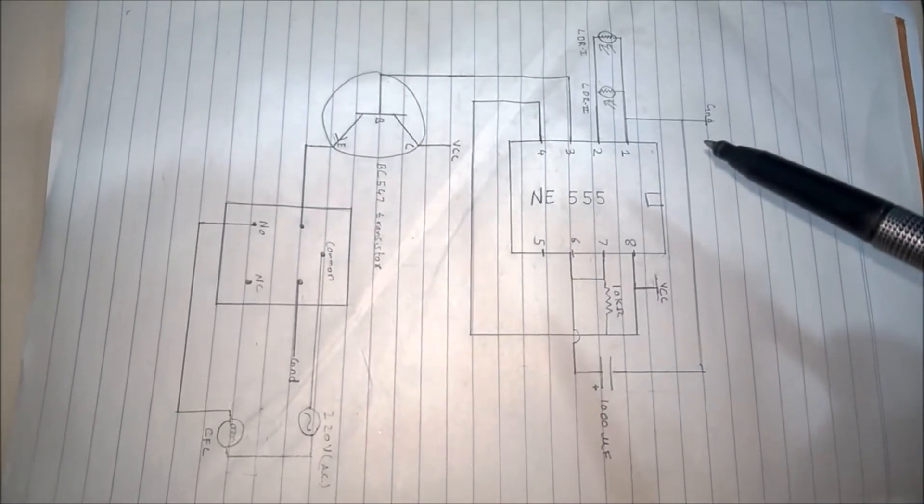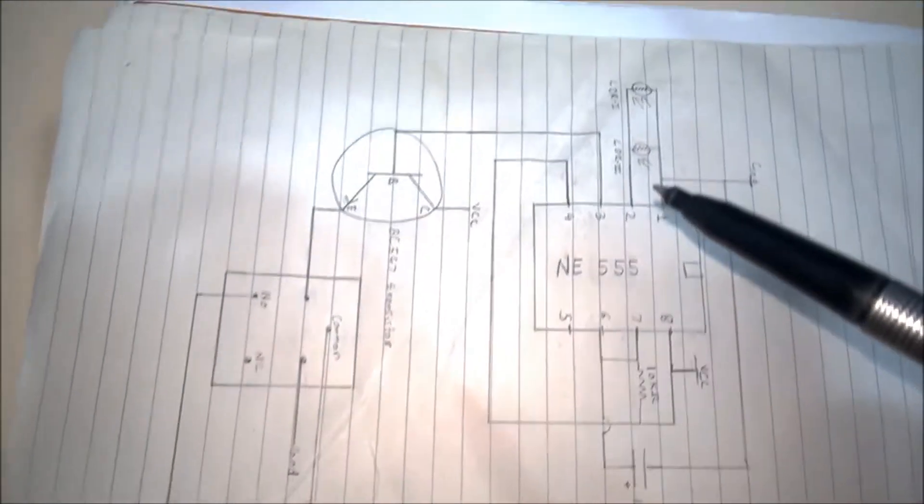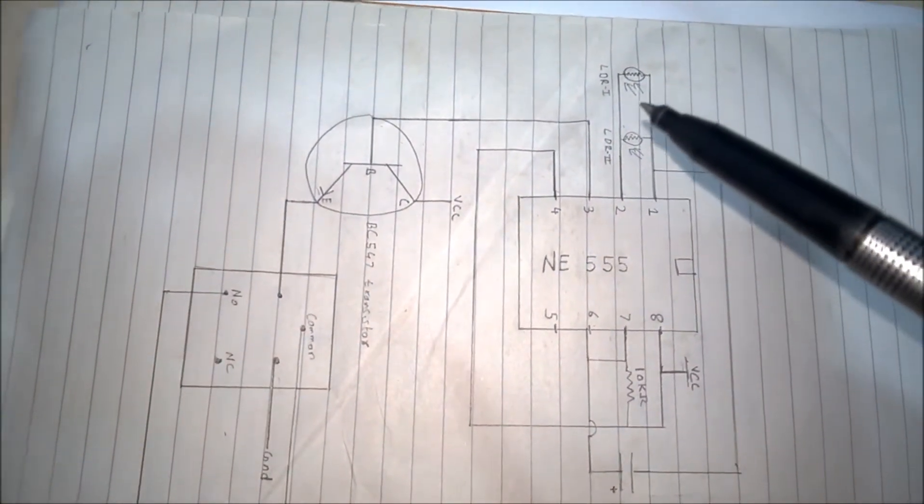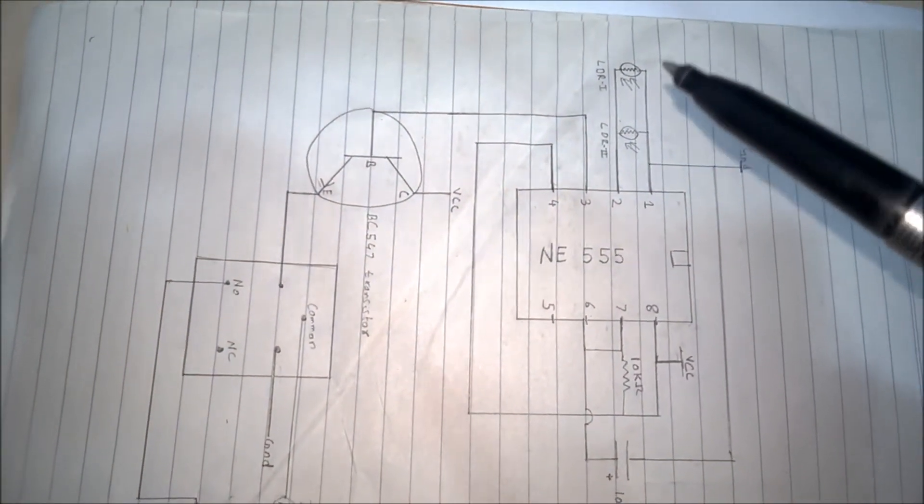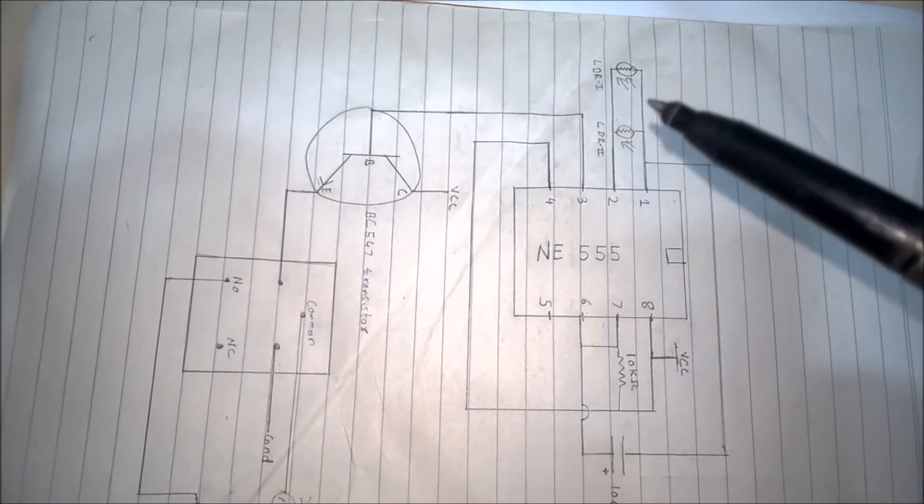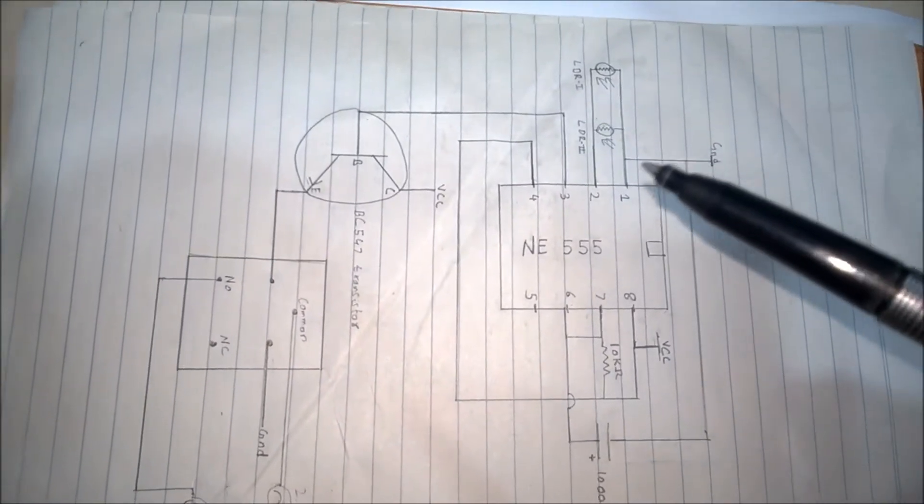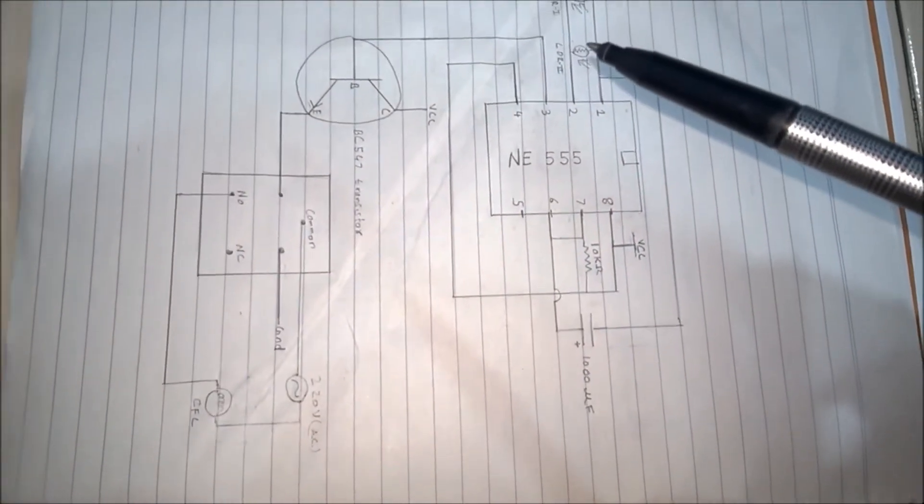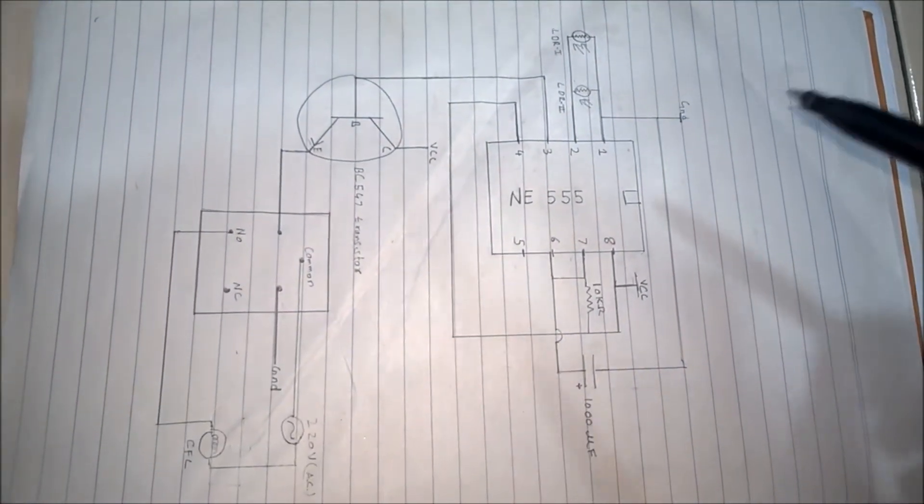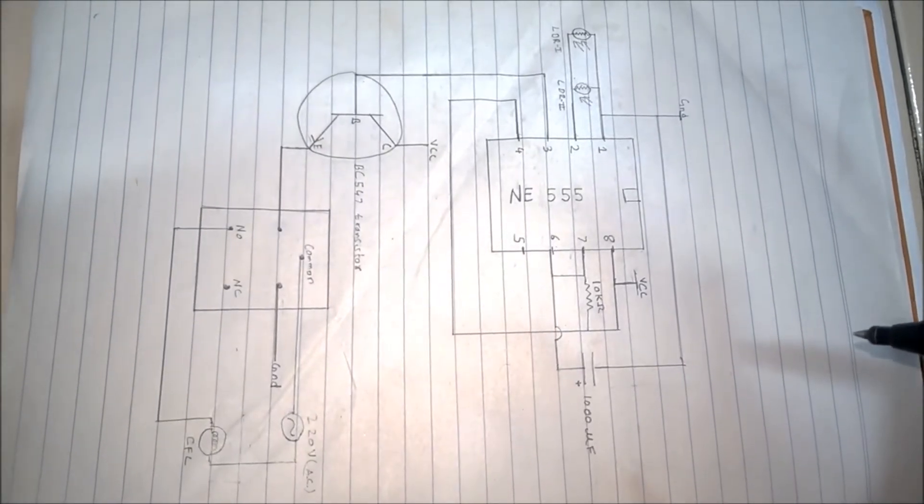I have used two LDRs at the 2nd pin, i.e., the set pin. I connected them in parallel and one of them is placed such that as the door opens, it is set by outside illumination. This triggers the base of an NPN transistor, BC547, which switches the relay on. Thus, the CFL is illuminated.